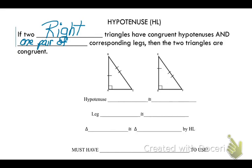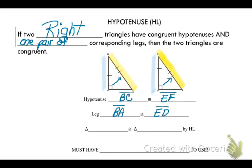Looking at our diagram, we have two hypotenuses — the side opposite the right angle — so hypotenuse BC is congruent to hypotenuse EF. We've also shown that leg BA is congruent to leg ED. Therefore, using the hypotenuse leg theorem, triangle ABC is congruent to triangle DEF. It's very important that you have two right triangles to use this theorem, and you must state in your proof that they are right triangles.